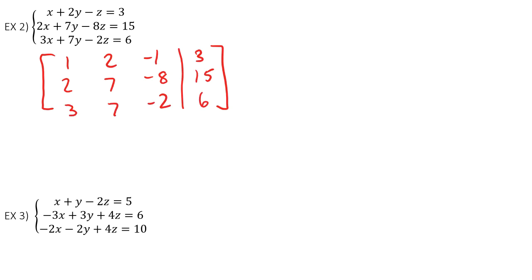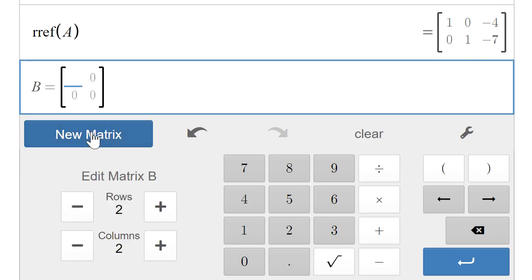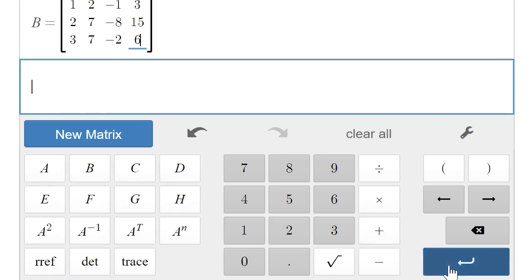Let's go back to the calculator. And again, we're going to go to new matrix. This one has 3 rows, 4 columns. And then we start putting in our numbers. So 1, 2, negative 1, 3, 2, 7, negative 8, 15, 3, 7, negative 2, 6. Hit enter.